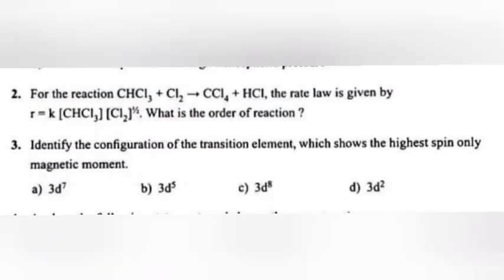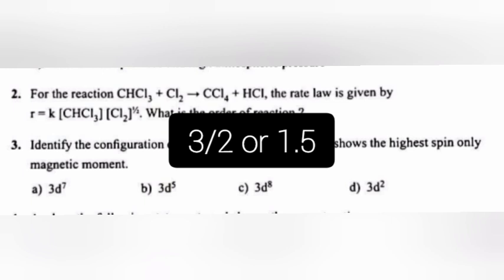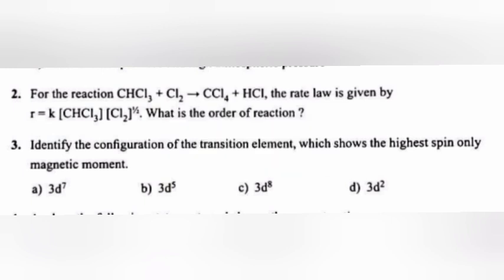Question 2: What is the order of the reaction? Answer 3/2 or 1.5. Question 3: Identify the configuration of the transition element which shows the higher spin only magnetic moment. Answer B: 3d5.